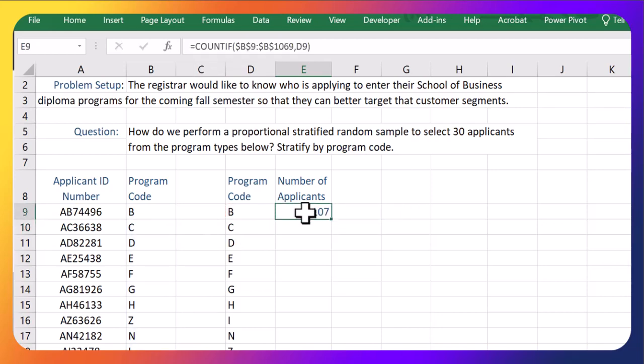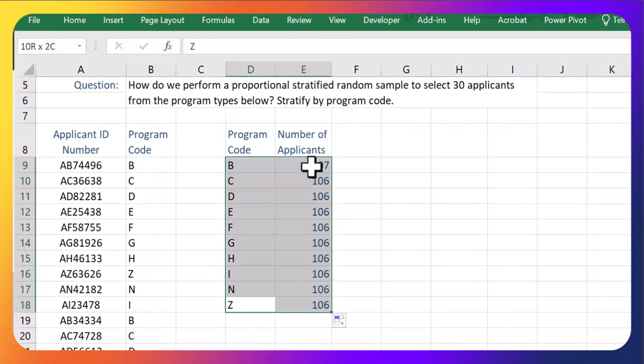So there are 107 B's. Beautiful. And since I've referenced the B and locked the reference to the whole data set here, now I can just double click and get the count for each of the codes.